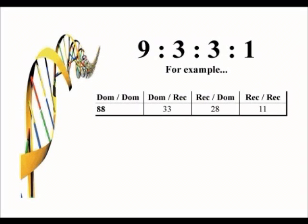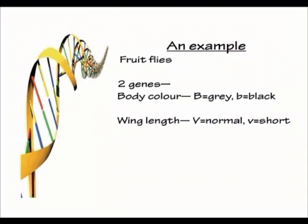Unfortunately, what we're doing today doesn't fit that nice 9:3:3:1 model, and we need to know why. The example we're going to look at is within fruit flies, examining two genes: one that codes for body color and one for wing length.